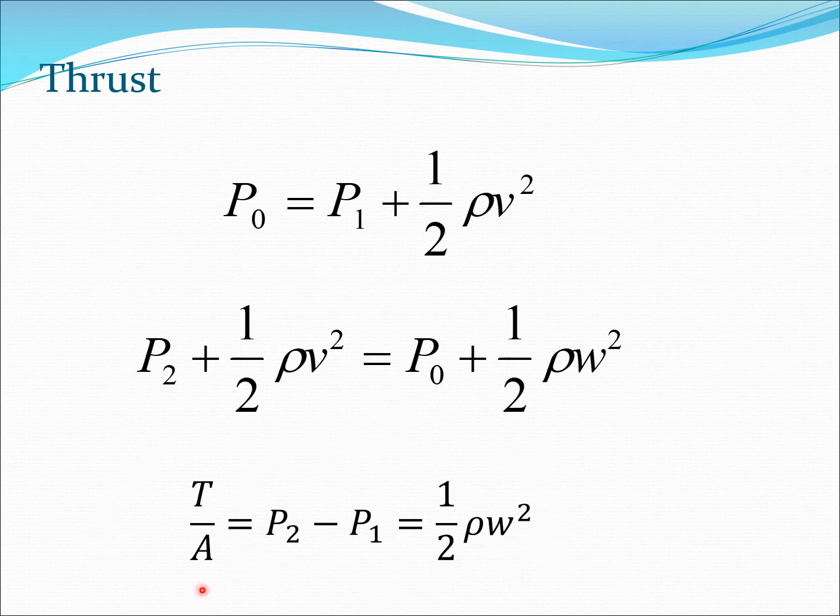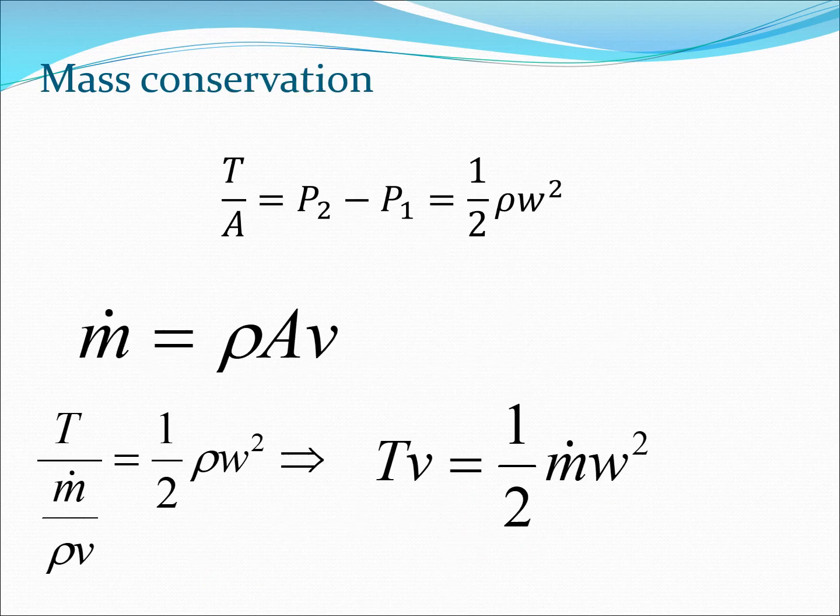This then gives us the equation of T/A in terms of 1/2 ρw². That's the equation T/A = 1/2 ρw². Now we are going to go back to our mass conservation, which was ṁ = ρAv. I'm going to extract A from this mass conservation, so A would be ṁ/(ρv), and I'm going to plug it into the formula for T/A.